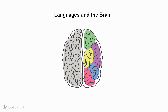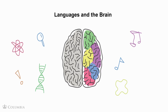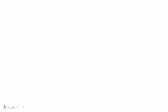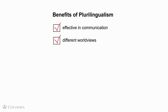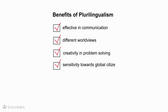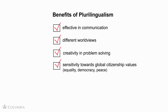Different studies on language education show the benefits that speakers of two or more languages may have. For instance, they are more effective in communication, have different worldviews and better understanding of other cultures, show creativity in problem solving when dealing with complex global issues, and sensitivity toward global citizenship values. Their memory improves and that might stave off dementia. Most importantly, they are faster language learners.